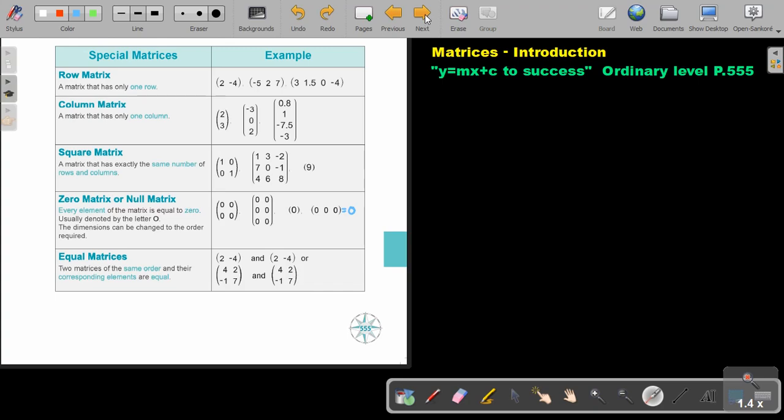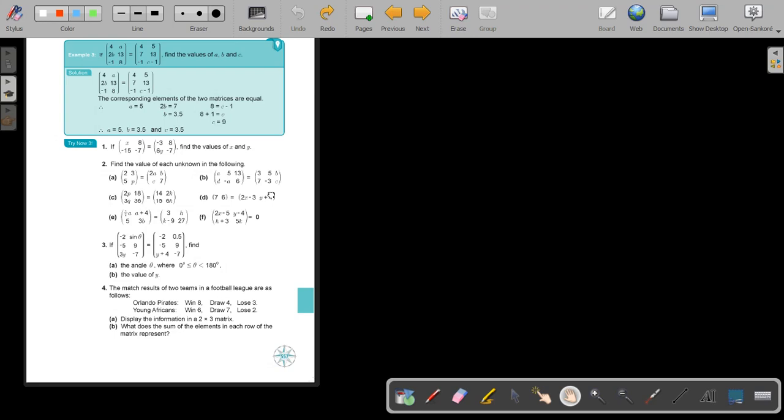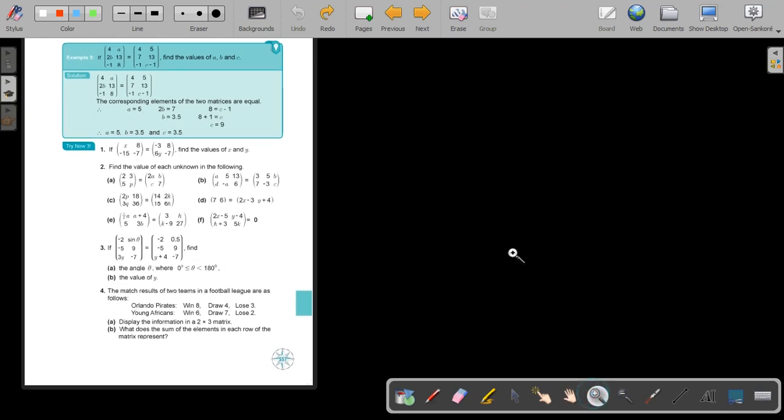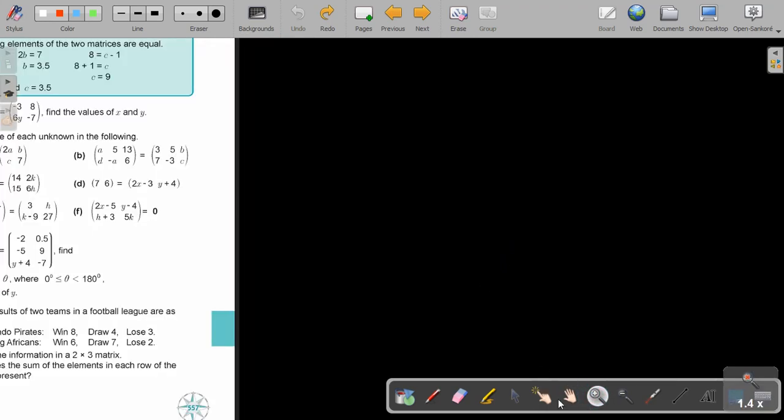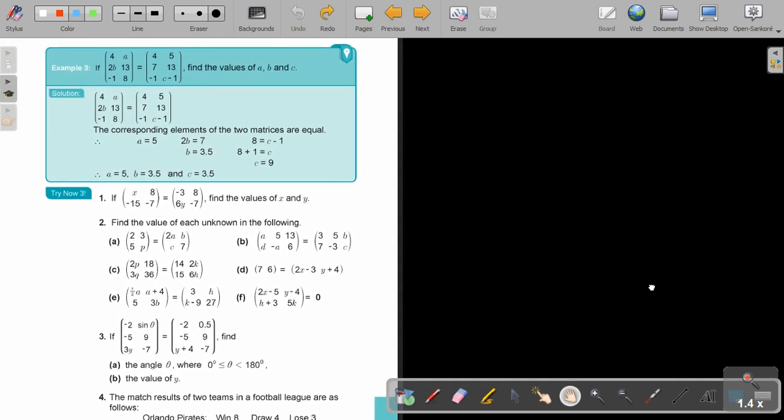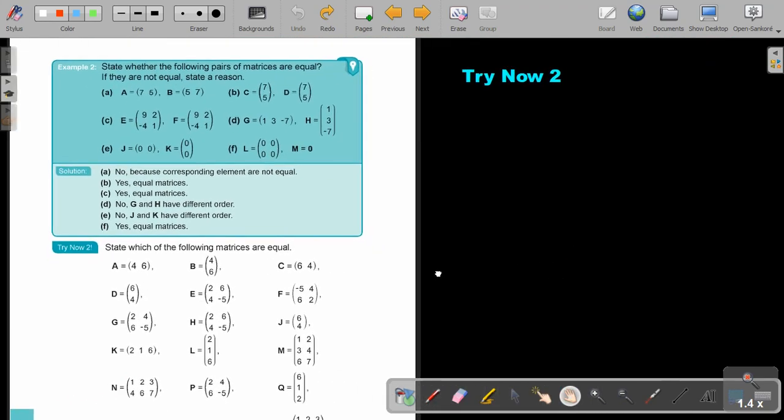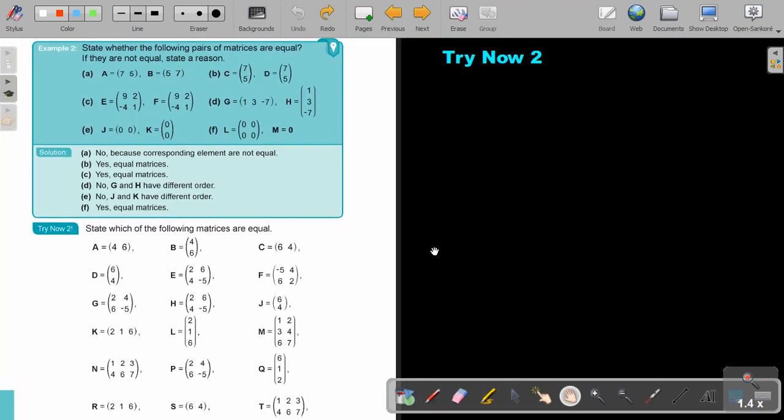Let's go on. Let's look at an example. Just going to make it a bit bigger. I think I'm too many pages away. Okay. Let's look at example two. So, in this case, state whether the following pairs of matrices are equal. If they are not equal, state a reason. So, look.